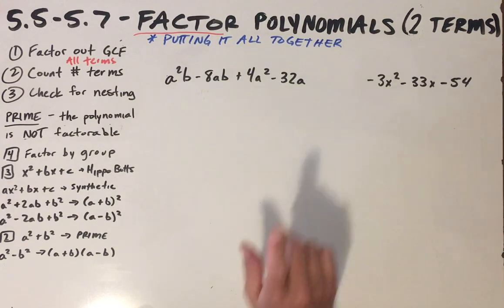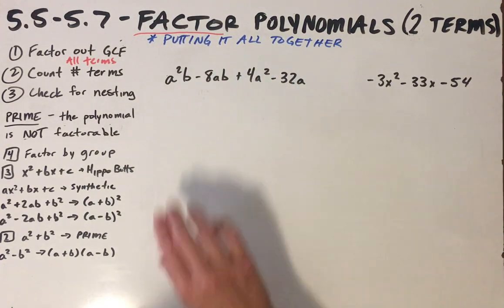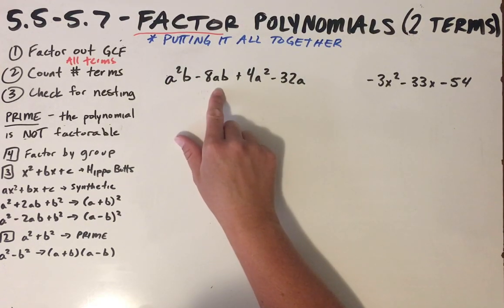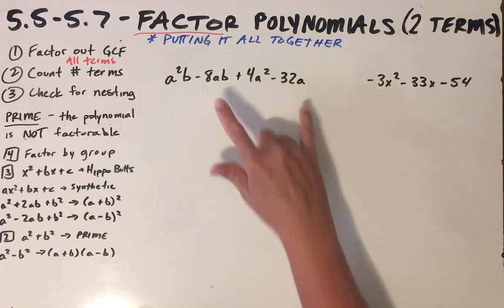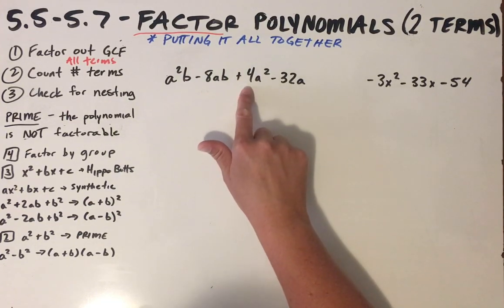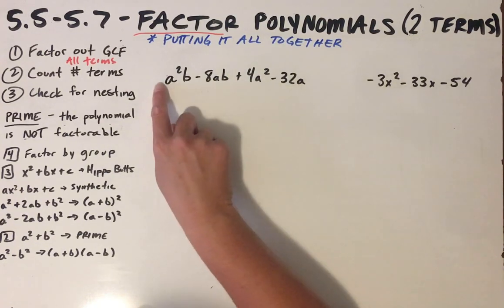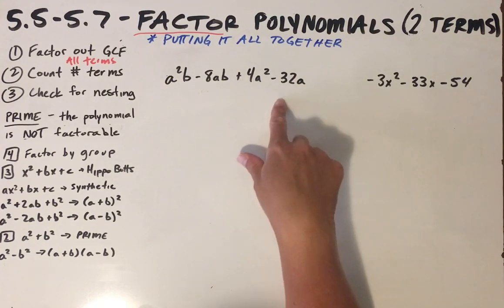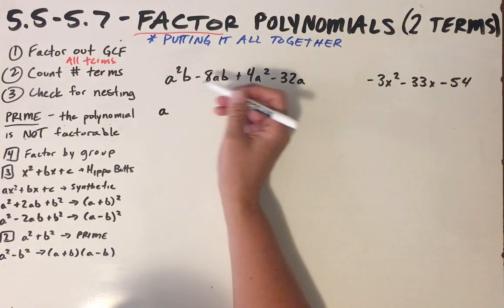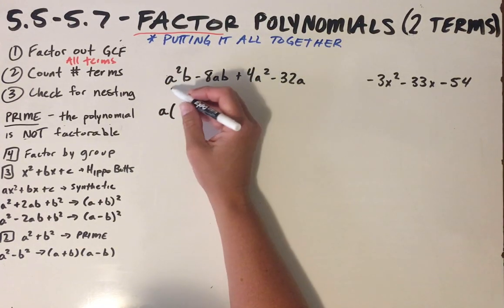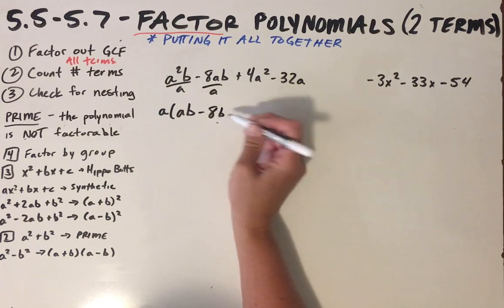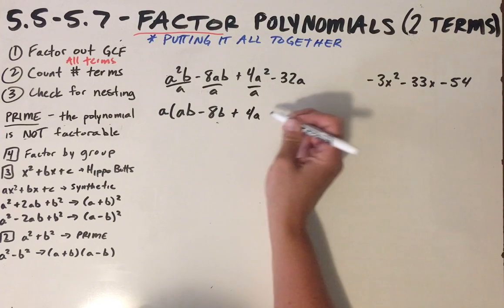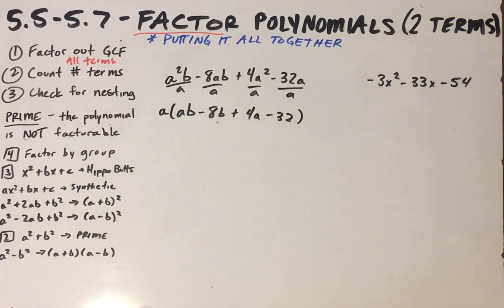Next problem: first step, check for a GCF. I've got terms with a, a, a, and a, so I can pull out an A. But I can't pull out more than A — the constants 4, 8, and 32 all have 4 in common, but one term doesn't have a 4. There are B's in two terms but not all. So the only GCF is A. Dividing each term by A: I get ab, minus 8b, plus 4a, and minus 32.